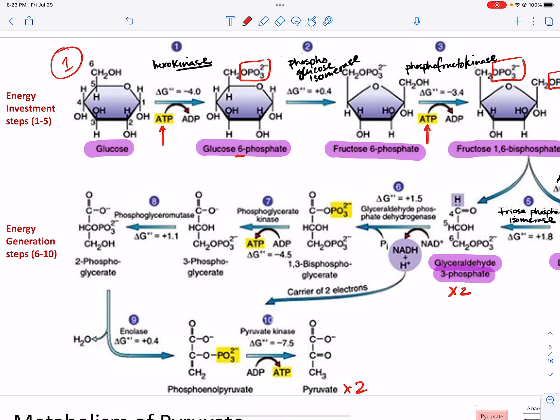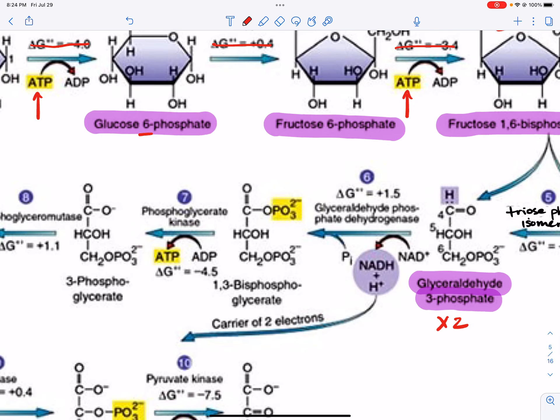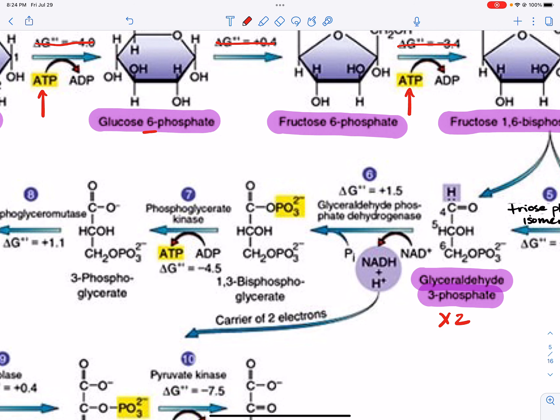You do not need to know any of the delta-G values. Know these enzymes and know the metabolite names highlighted in purple for steps 1 through 5. I'm not going to walk through steps 6 through 10 in depth naming all the enzymes, but I do want to give you the overall rundown of what happens.